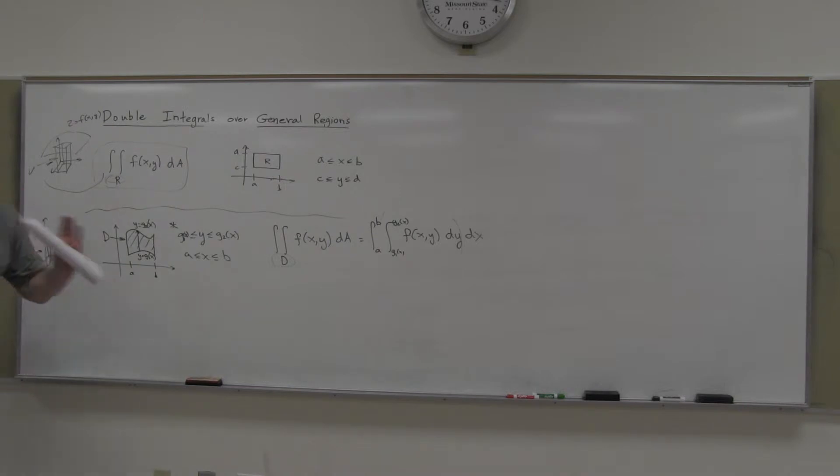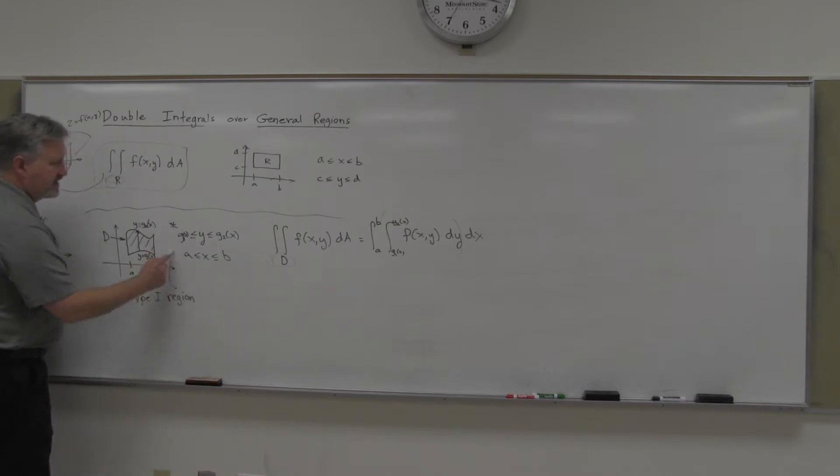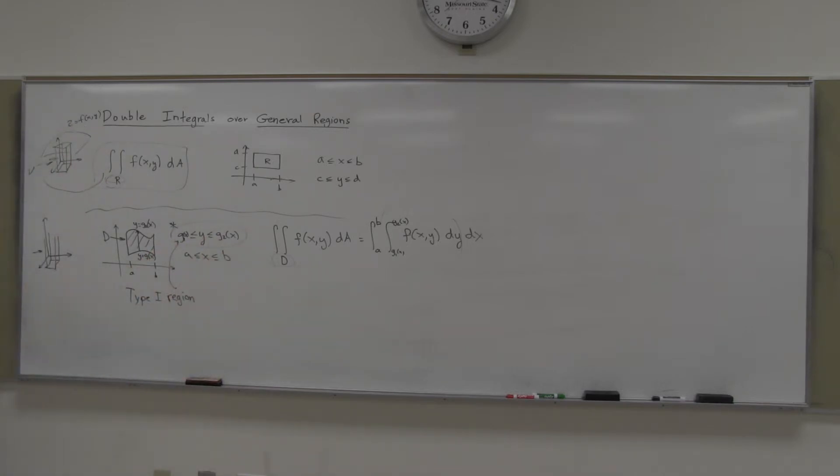So instead of having numbers here, you're actually going to have expressions in X. You might, some of them might be just a number, but generally speaking, you'll have a function of X here and then a function of X here for our Y values. And then, of course, the X is going to be A to B. Now, here's another little catch. The book calls this one a type 1 region. Roman numeral one. And the distinction is, this is a type 1 region because the Y's are functions of X. We're going from this Y to this Y and those are functions of X. So that's the distinction between a type 1 region and what we'll do in a moment type 2 region.